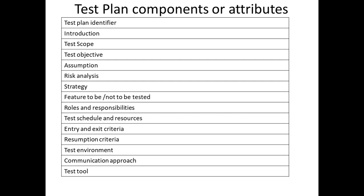Entry and exit criteria: under entry criteria, it describes when to start the testing — what environment and which criteria must be fulfilled before you can start testing. Under exit criteria, it describes when to stop the testing — for example, if there are 100 test cases and when you execute all 100 test cases successfully, you can stop the testing.